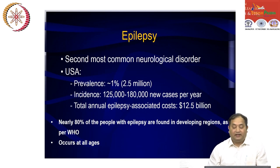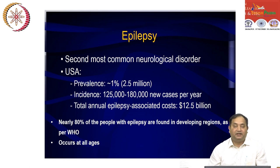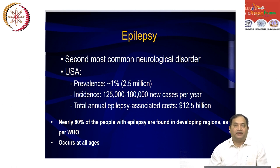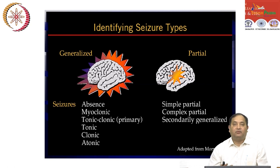Looking at etiological disease, epilepsy is very common not only in developed but also in developing countries. The WHO report indicates 80 percent of epilepsy cases are from developing nations, and it is common across all ages. Younger children are more vulnerable, but as age progresses beyond 60 years, people become more prone to seizures due to lowered seizure threshold.